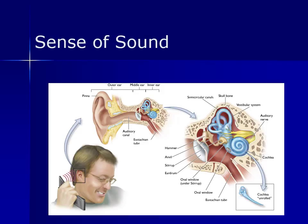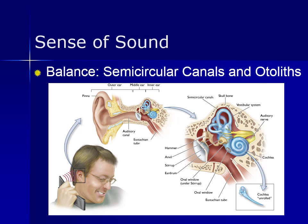The inner ear is also responsible for balance. It lets us know where we are in space and time — where up is up and down is down. The semicircular canals consist of three tubes that contain fluid that sloshes through them when the head moves, signaling rotational or angular movement in the brain. The otoliths sense forward, backward, or up and down motion, as well as the pull of gravity.